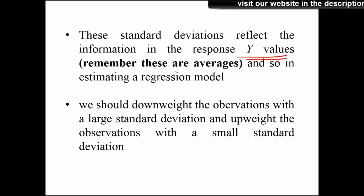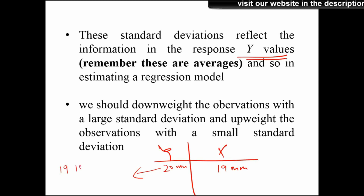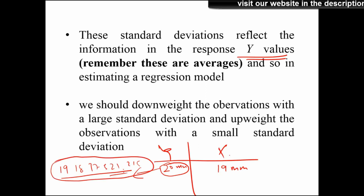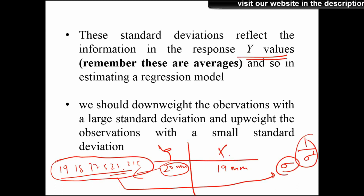The standard deviation reflects the information in the process. For y and x, say diameter is 20 mm here and 19 mm there. That 20 mm is an average of many seeds — say 10 seeds with values like 19, 18, 17.5, 21, 21.5 — because each parent has many offspring. Since we have several observations we can find the standard deviation or variance and use that as the weight.